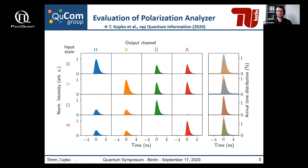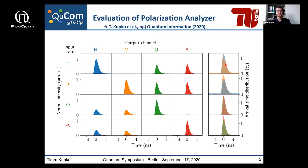We did this for all four possible input polarization states. However, if we re-normalize to examine the arrival time distribution, one can see that there are still some residual events in the wrong detection channel, which will be the quantum bit error ratio contribution of our receiver module in full QKD implementations.